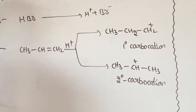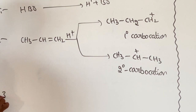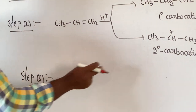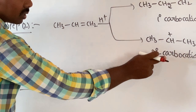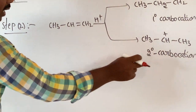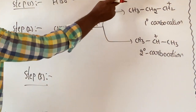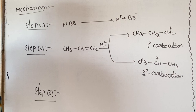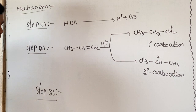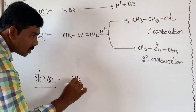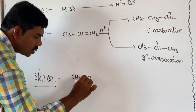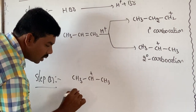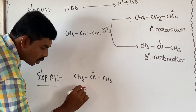The secondary carbocation is more stable compared to the primary carbocation. Step 3: the secondary carbocation CH3-CH⁺-CH3 is attacked by the nucleophile Br⁻ to give 2-bromopropane as the major product.